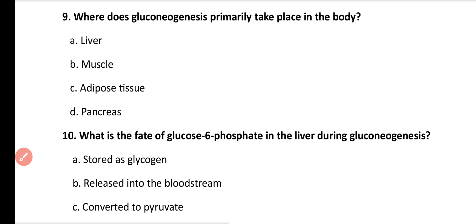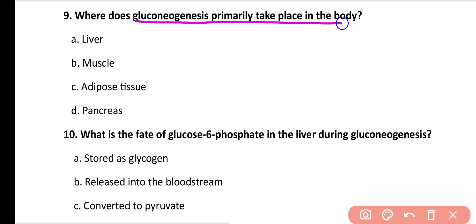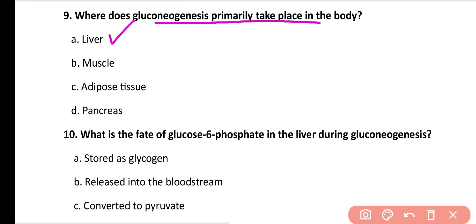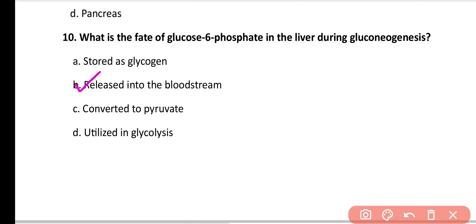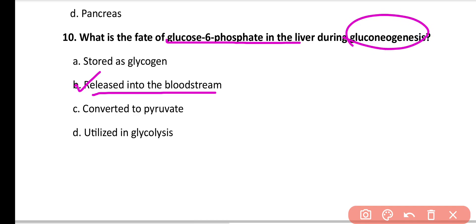Question number 9: Where does gluconeogenesis primarily take place in the body? Options: liver, muscle, adipose tissue, pancreas. Correct answer is option A. Gluconeogenesis primarily takes place in the liver. Question number 10: What is the fate of glucose 6-phosphate in the liver during gluconeogenesis? Options: stored as glycogen, released into the bloodstream, converted to pyruvate, utilized in glycolysis. Correct answer is option B. Glucose 6-phosphate in the liver is converted into glucose and released into the bloodstream during gluconeogenesis.